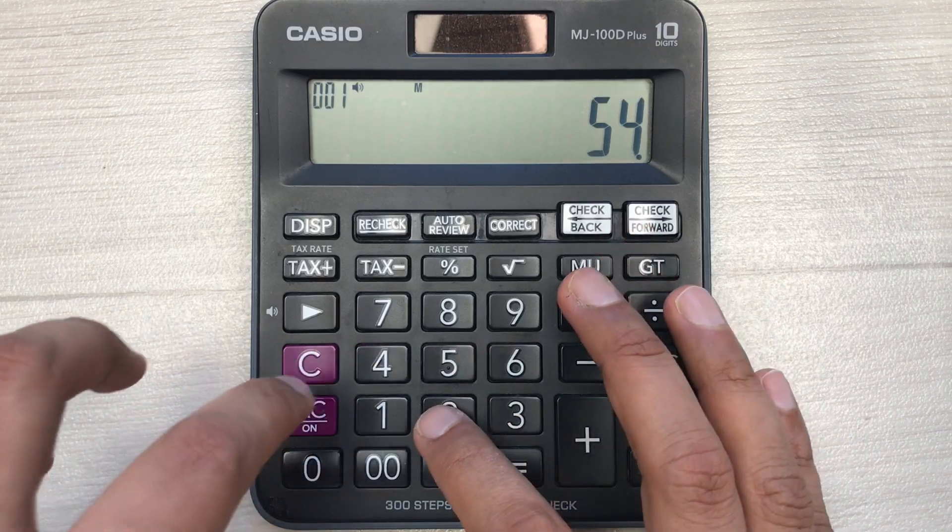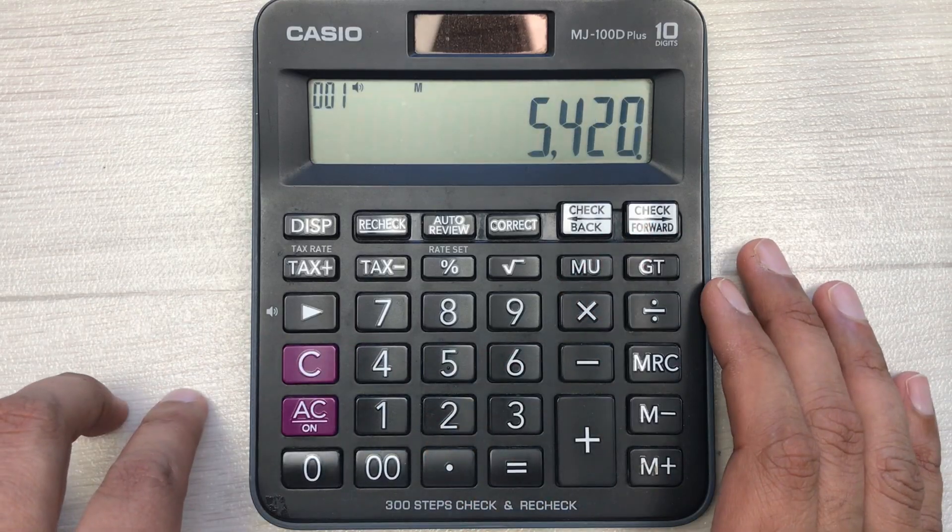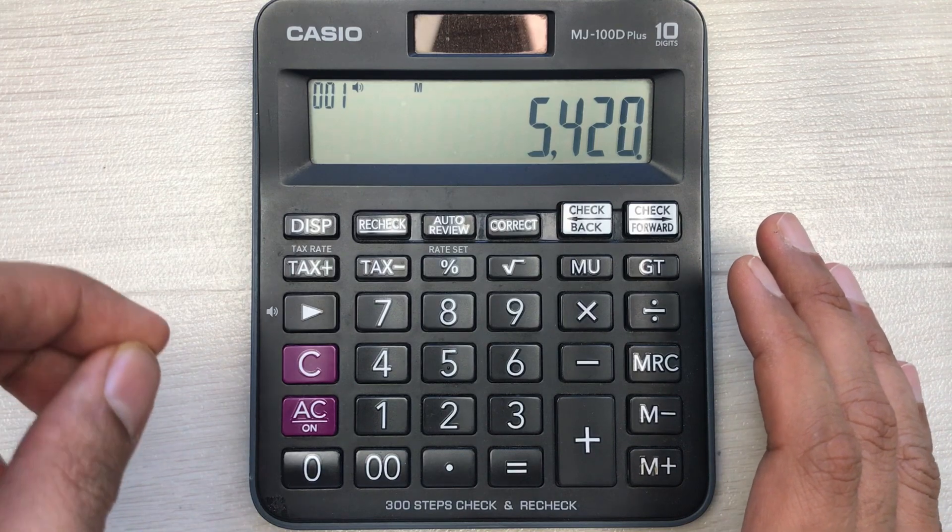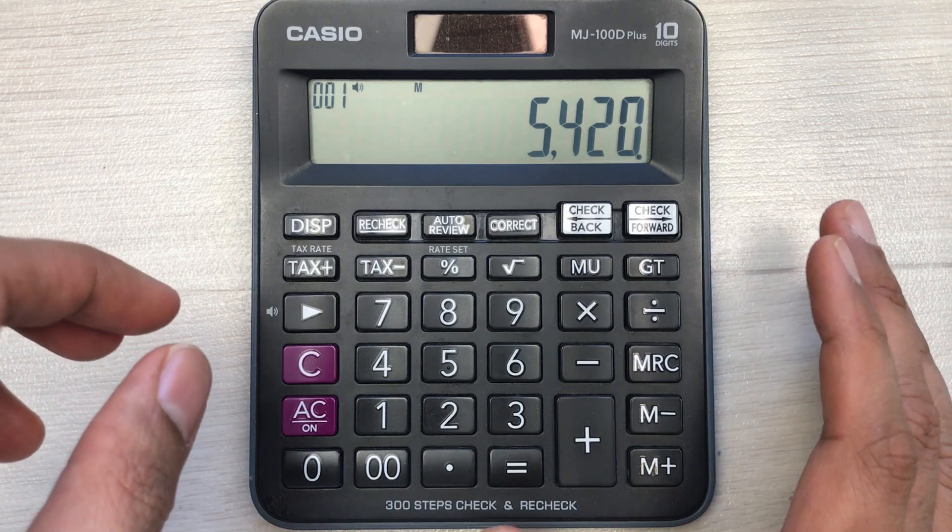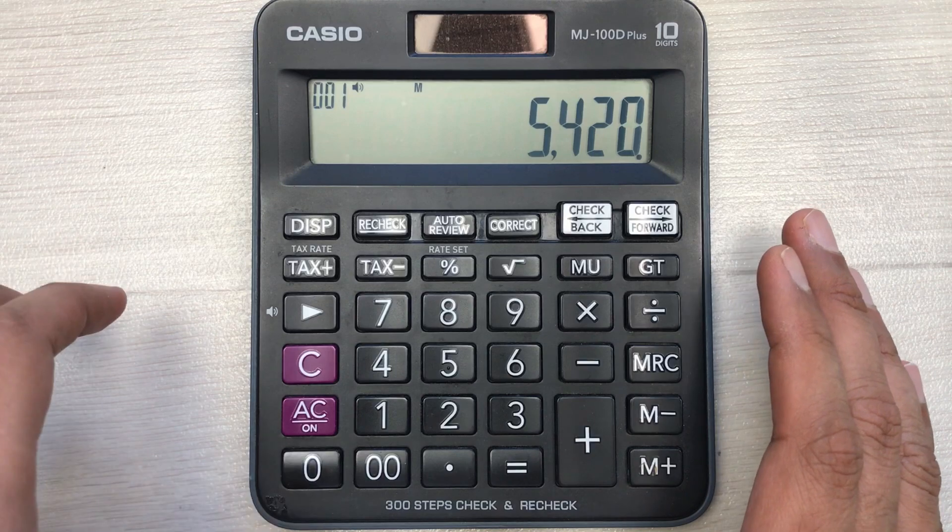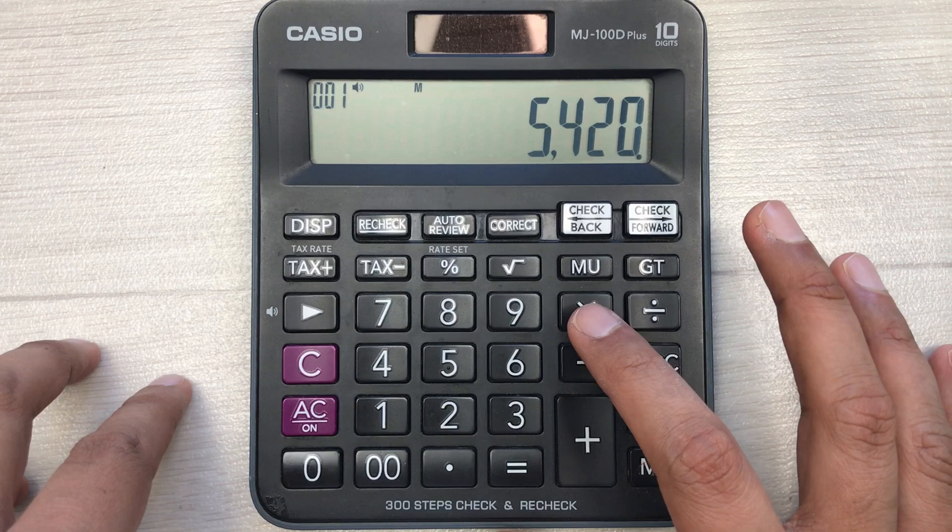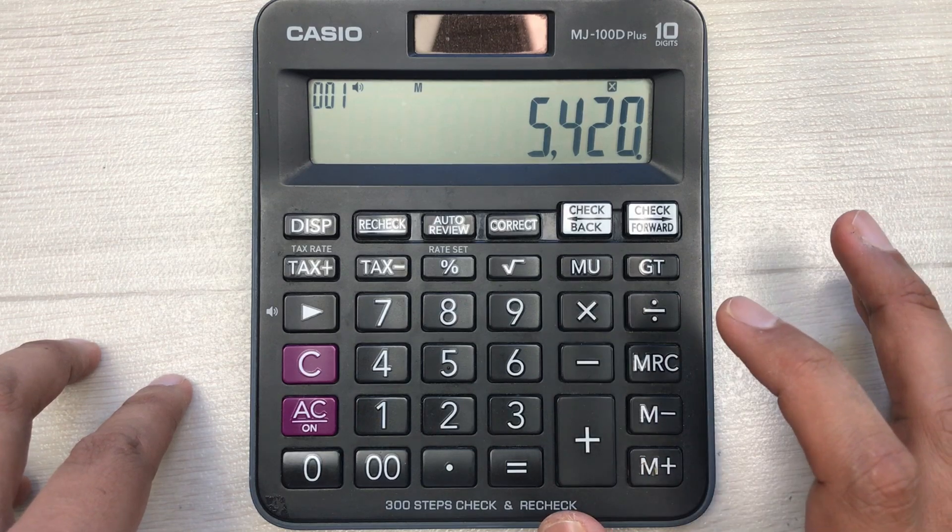is 5420 and you want to find out what will be the final amount after 35% discount. You can do it in two simple steps. First of all, you have to press this multiply button, and then you